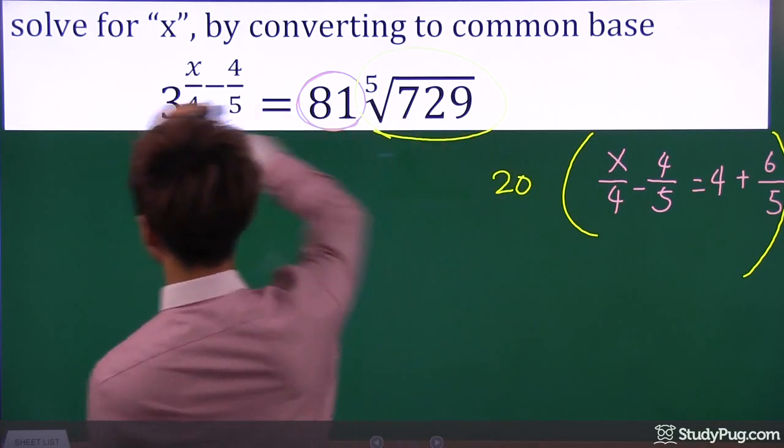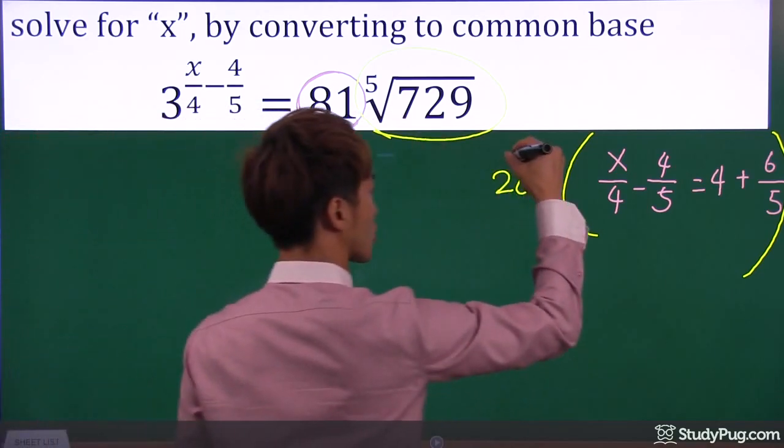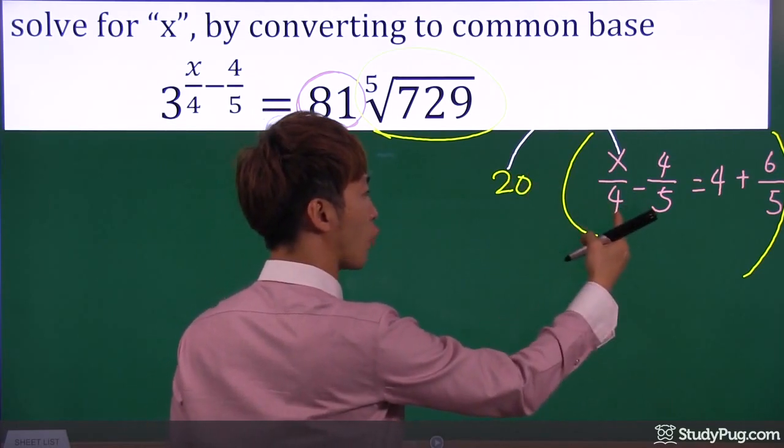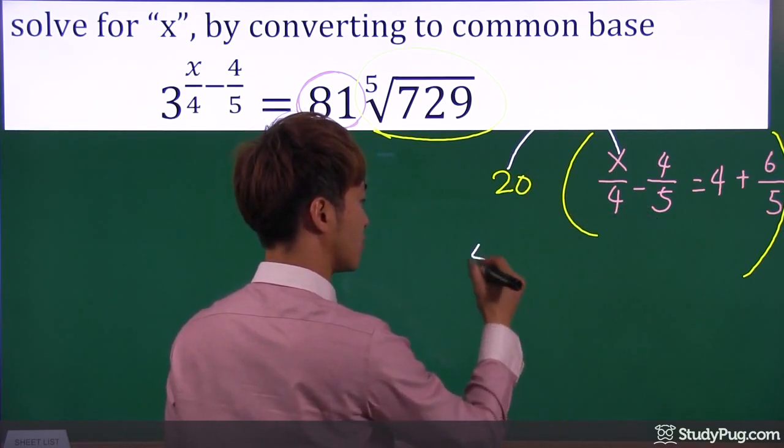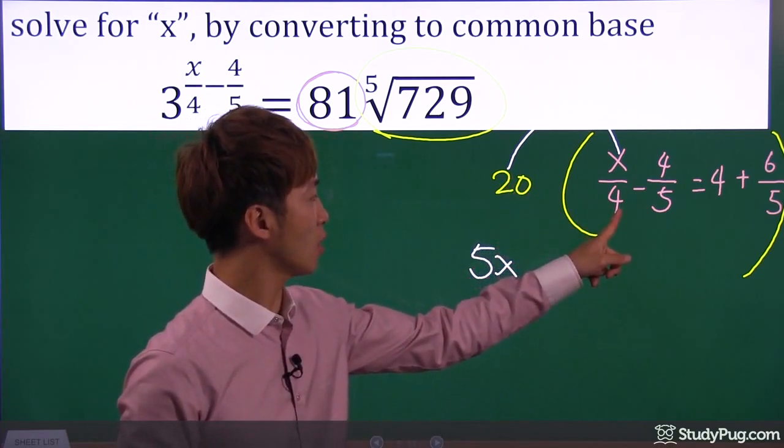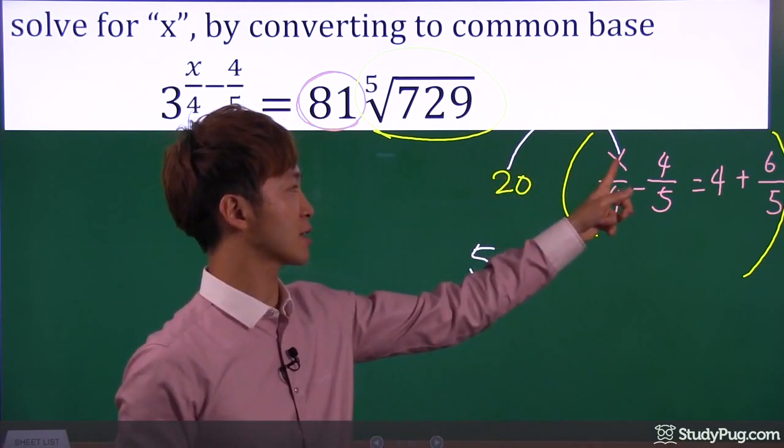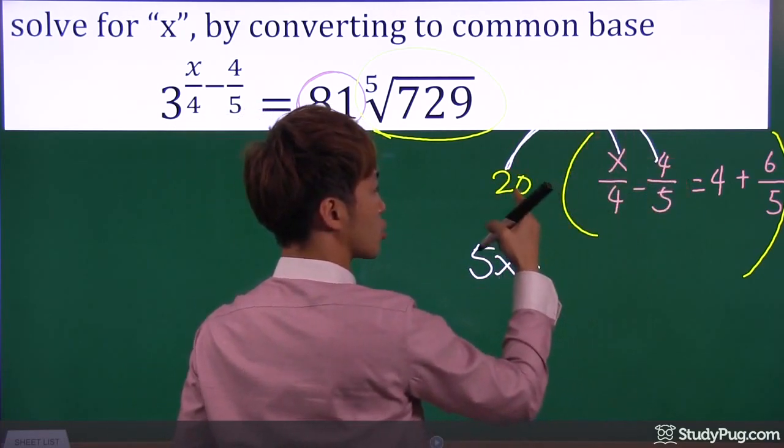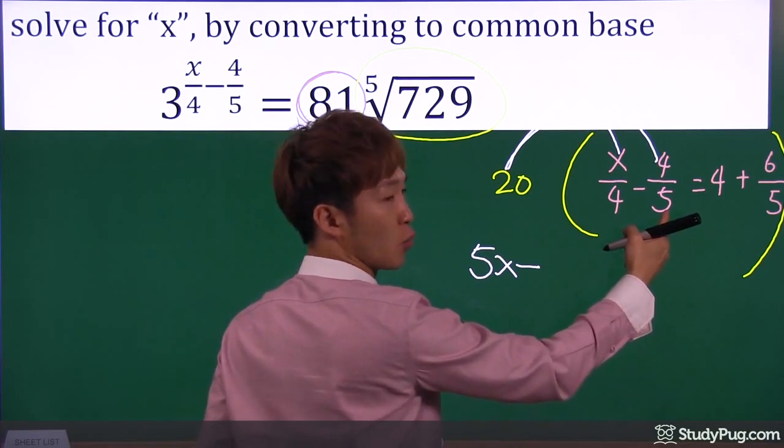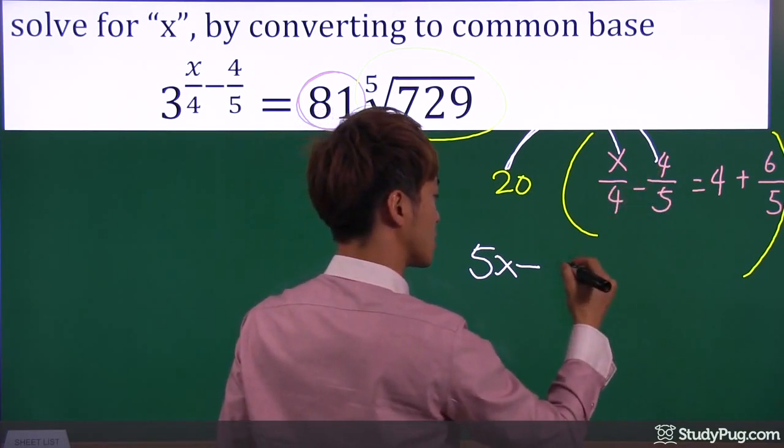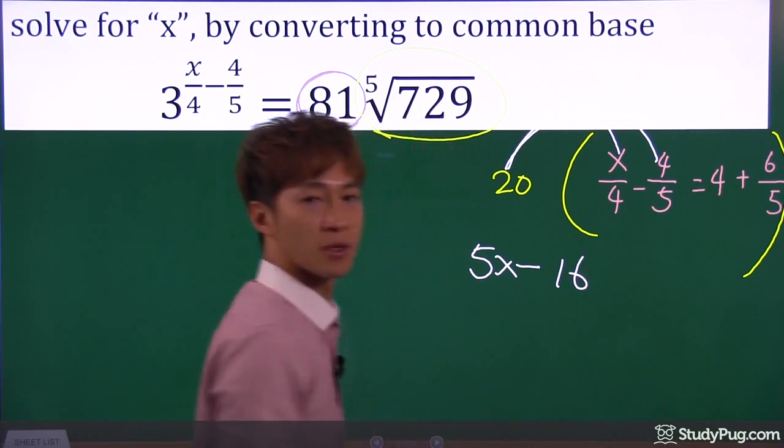So multiply twenty in. Twenty divided by four, we have five. So we have five x. You see that? Twenty divided by four, we have five. So five x, minus. Twenty divided by five, we have four. And four times four is sixteen.